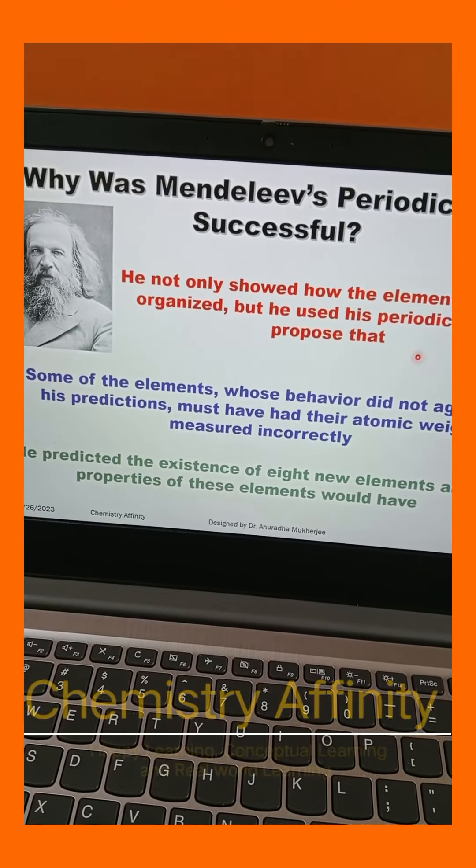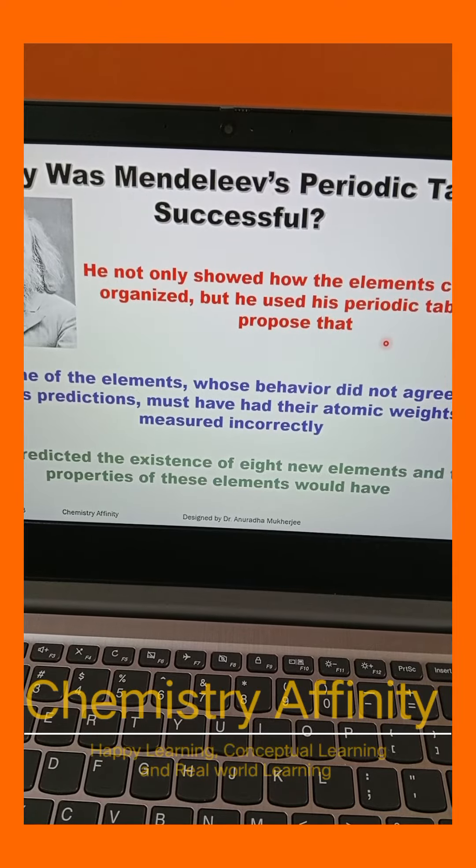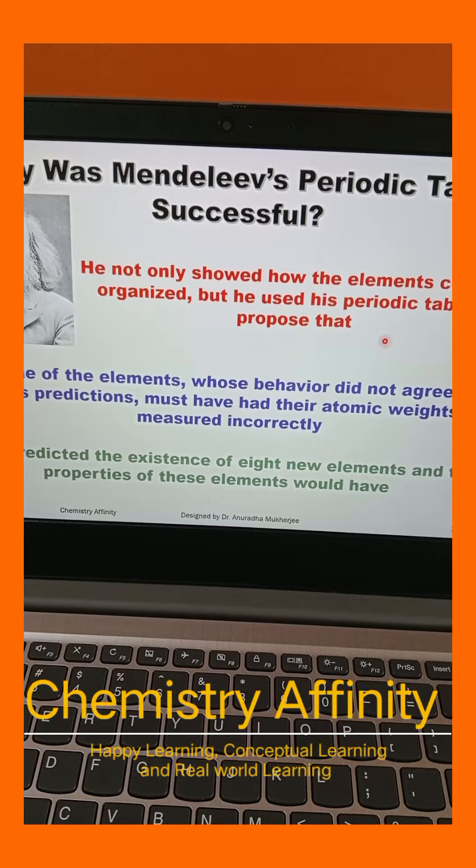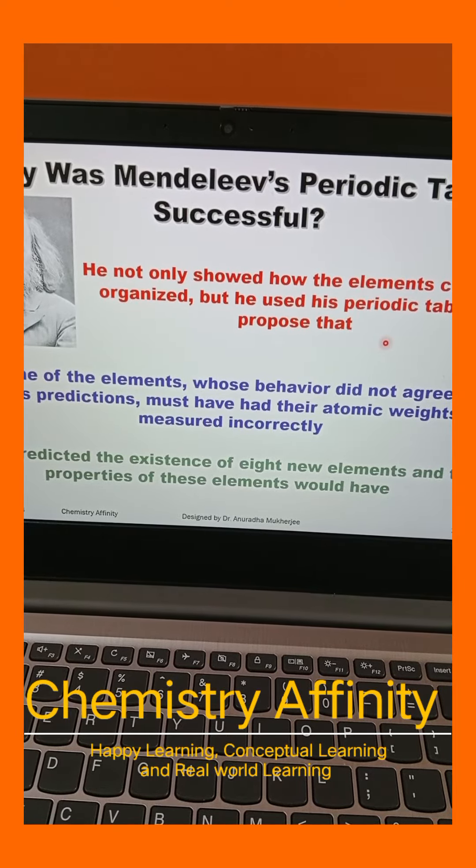that some of the elements whose behavior did not match his predictions must have had their atomic weights measured incorrectly. Scientists rechecked the atomic weights and found Mendeleev's prediction was correct.